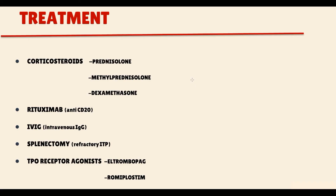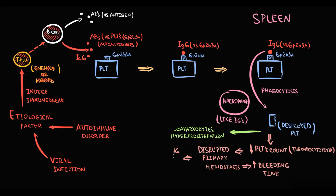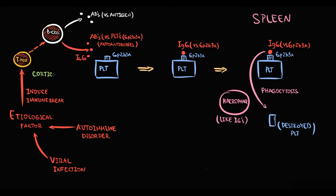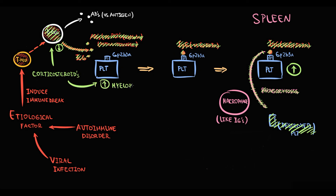The first treatment option is corticosteroids — prednisolone, methylprednisolone, and dexamethasone. Corticosteroids stimulate myelopoiesis and inhibit lymphopoiesis, inducing apoptosis of lymphocytes, so B lymphocyte count decreases. With fewer B lymphocytes, autoantibody production decreases. The lower the amount of immunoglobulin G against platelets, the lower the rate of phagocytosis by macrophages, the lower the platelet destruction, and the higher the platelet count. Additionally, corticosteroids stimulate myelopoiesis, increasing platelet production.